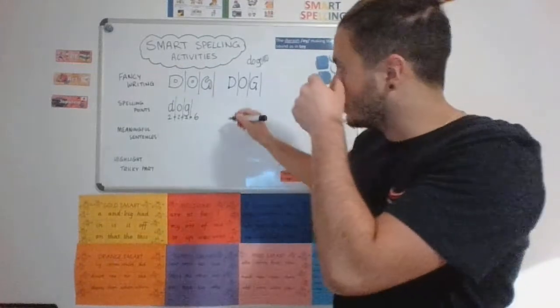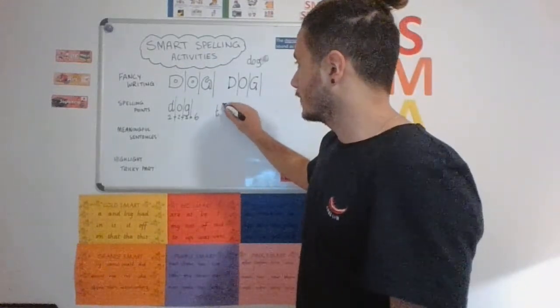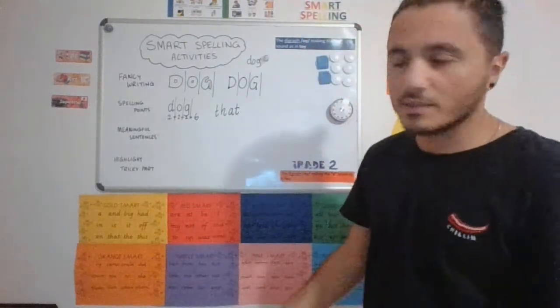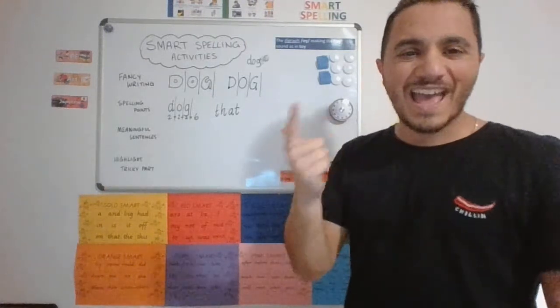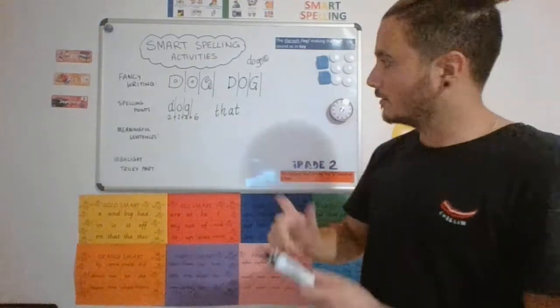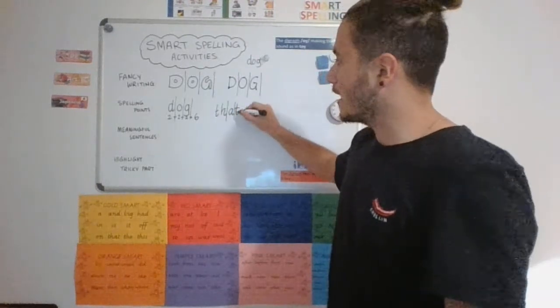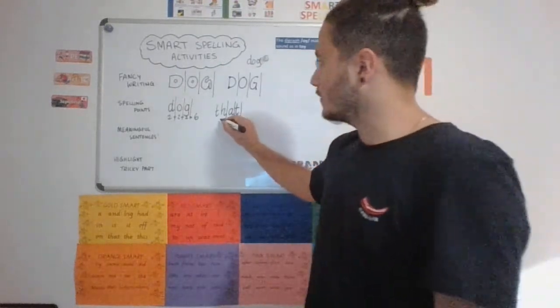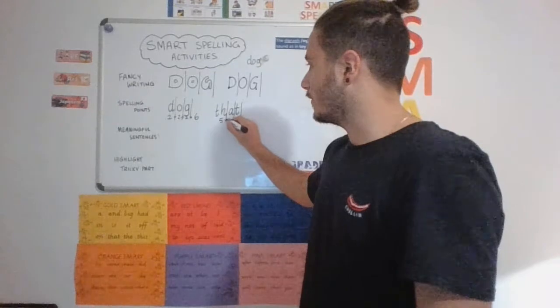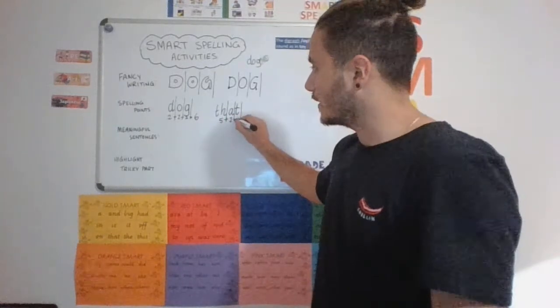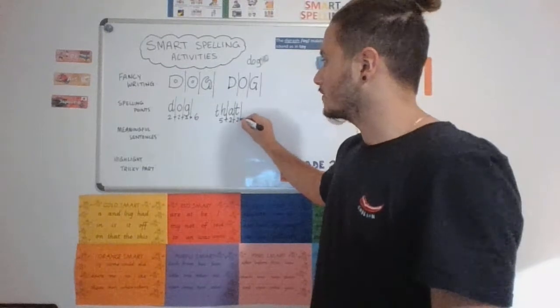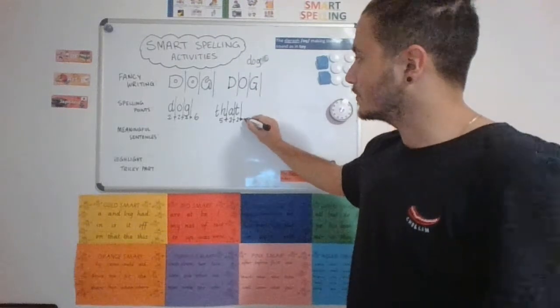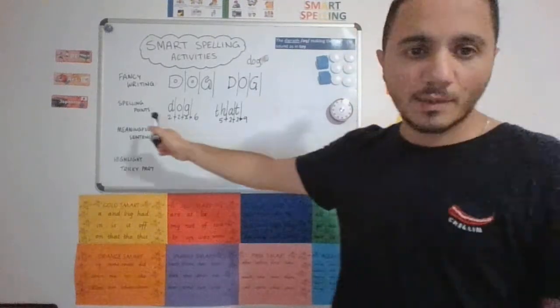But maybe we can do a bigger word. Let's do the word that, just so I can show you when there's a digraph in it. TH is a digraph, two letters that make one sound, so that is worth five points. Five points for the digraph. So five plus two, because the A is just a graph, and the T is a graph as well, plus two. So we've got five, six, seven, eight, nine. Five plus two plus two equals nine. That is spelling points.